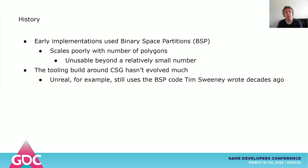Early CSG implementations all used Binary Space Partition Trees, or BSP for short. The problem with BSP is that it's basically a monolithic bag of polygons, which are often split into multiple pieces. Every time a polygon is added, it grows larger and larger and more complicated. The more polygons you add, the slower it becomes. Due to these scalability issues, it quickly becomes unusably slow, even after a relatively small number of shapes.